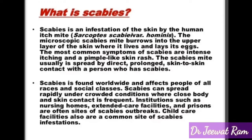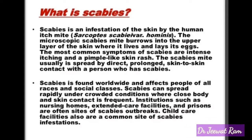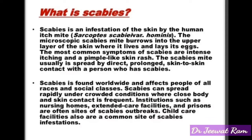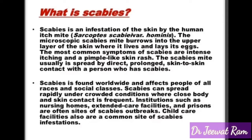Scabies can spread rapidly under crowded conditions where close body and skin contact is frequent. Institutions such as nursing homes, extended care facilities, and prisons are often sites of scabies outbreaks. Child care facilities also are a common site of scabies infestations.